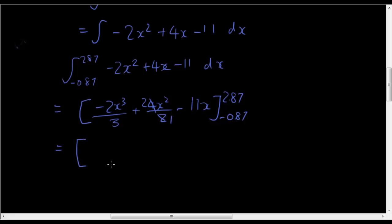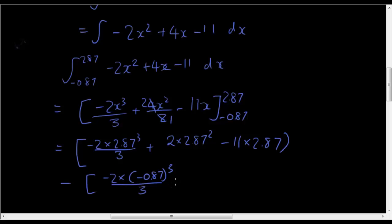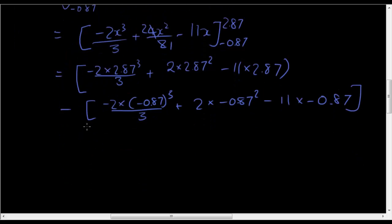So now simplify this one first. Okay, so now I'm going to sub it in. So negative 2 times 2.87 cubed over 3 plus 2 times 2.87 squared minus 11 times 2.87 minus negative 2 times negative 0.87 cubed over 3 plus 2 times negative 0.87 squared minus 11 times negative 0.87. And now I'm going to type all of this into the calculator and see what it equals.